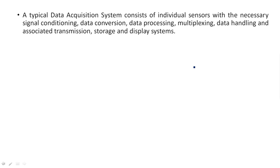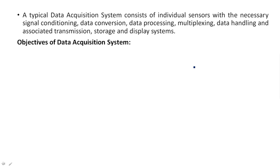These are the various step-by-step processes we need to encounter in data acquisition, from start to end. From individual sensors — transducer one, transducer two, transducer three, and so on — we collect the data. This data passes through a signal conditioning device, then data conversion, where analog data may be converted to digital data, and then multiplexed for data handling and transmission, storage, and display.